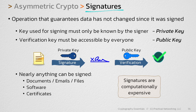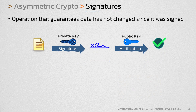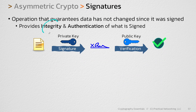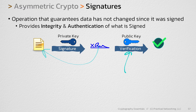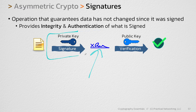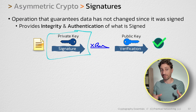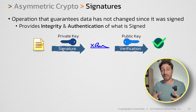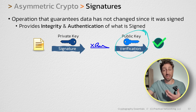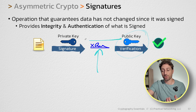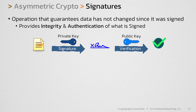When you sign something, you're providing both integrity and authentication to what is signed. You have integrity because if anything changes in the message, this signature — which applies only to this message — will no longer verify with the new changed message. And you have authentication because the only person that can create this signature is whoever has the private key. And if the private key was never shared with anyone, then you know for a fact that when you verify a signature with a particular public key, the only person that could have created that signature is whoever had the matching private key. That's what gives you authentication.